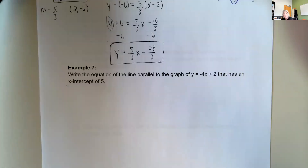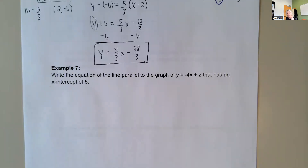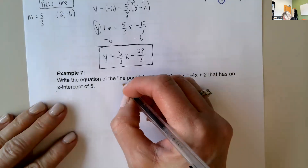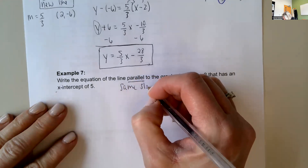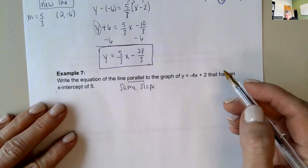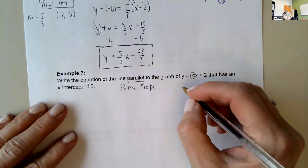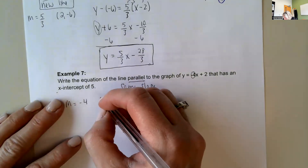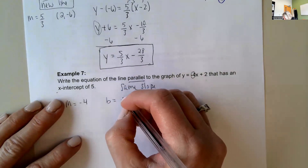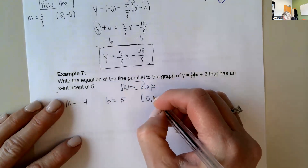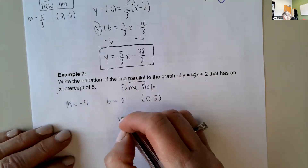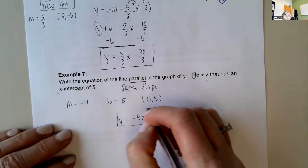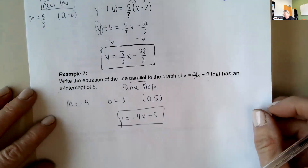Example 7: write the equation of the line parallel to y equals negative 4x plus 2 that has an x-intercept of 5. Parallel means same slope, and the equation is already in slope-intercept form, so the slope is negative 4. The x-intercept of 5 gives the point (5, 0), which is the y-intercept value here. So the equation is y equals negative 4x plus 5.